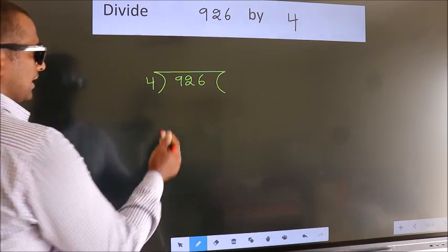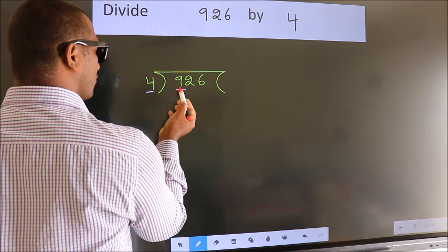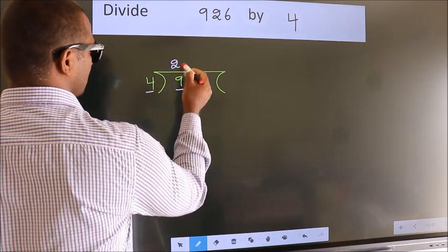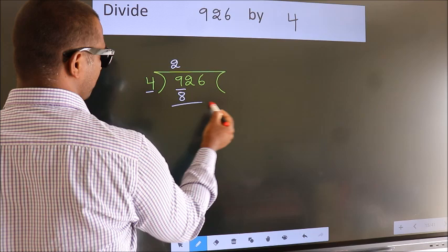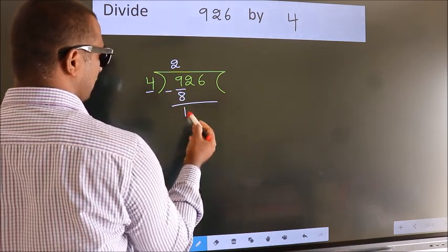Next, here we have 9, here 4. A number close to 9 in the 4 table is 4 times 2, which is 8. Now we should subtract. We get 1.